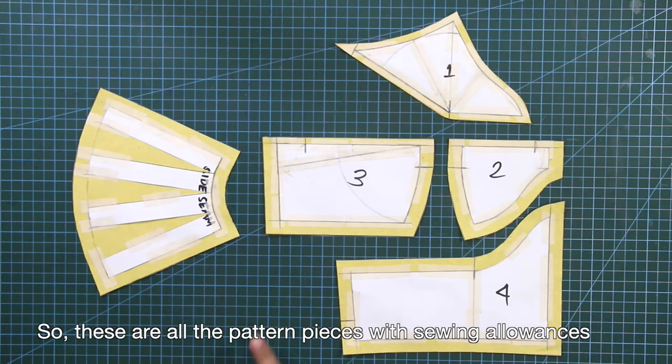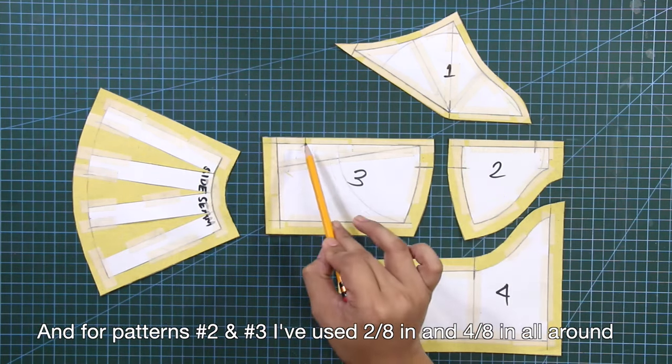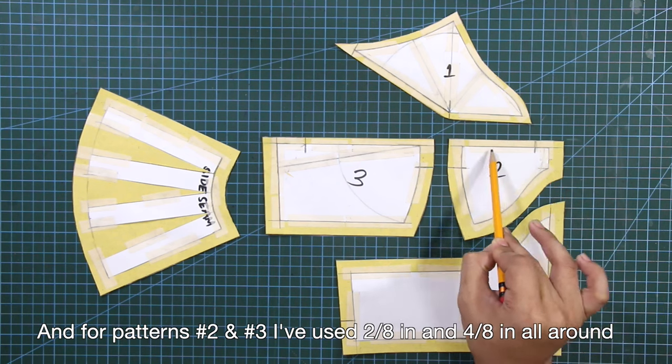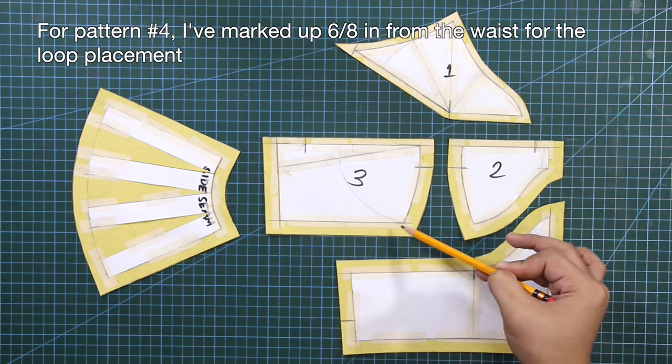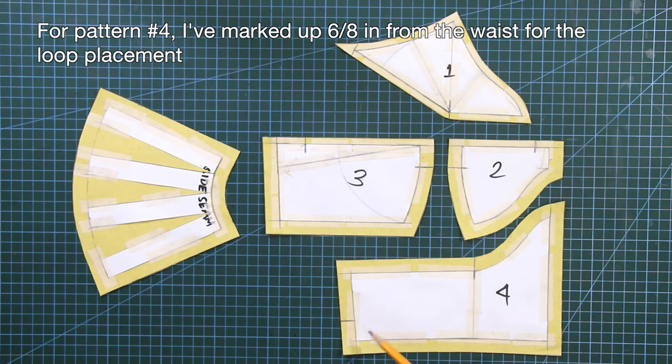So these are all the pattern pieces with sewing allowances. For pattern number one I've used 2/8 of an inch and 4/8 of an inch all around. For pattern number four I've marked up 6/8 of an inch from the waist for the loop placement.